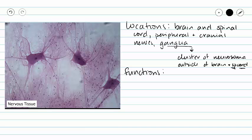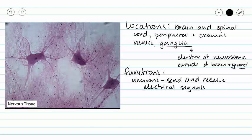When we talk about functions, we need to distinguish between our neurons and our neuroglia. So neurons are going to send and receive electrical signals. And in this way, they allow our body to communicate between the brain and all of the various different other parts of your body.